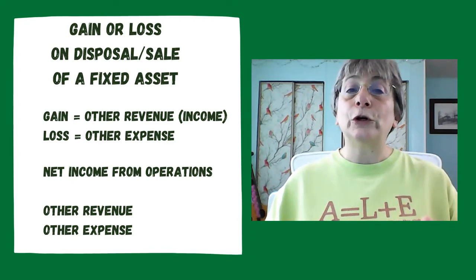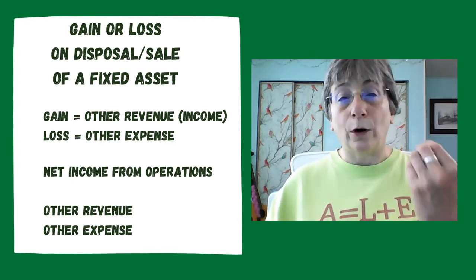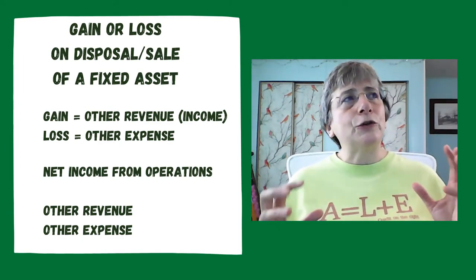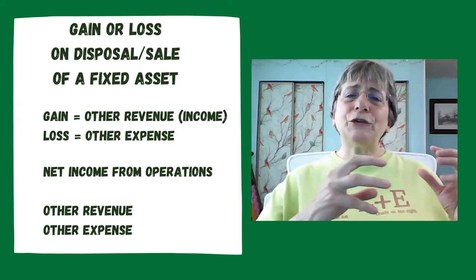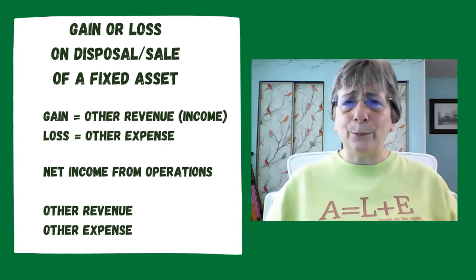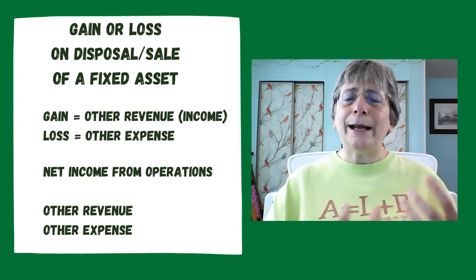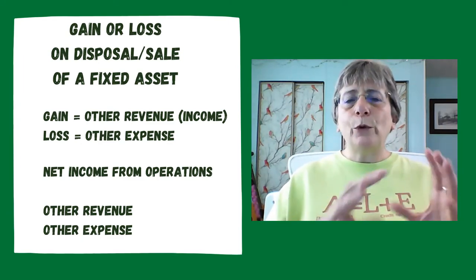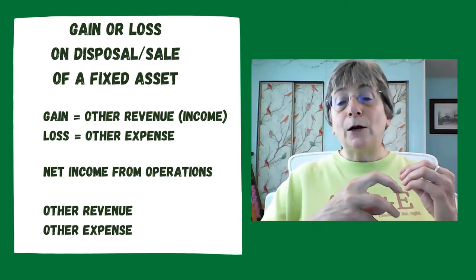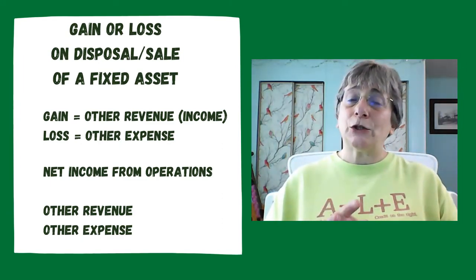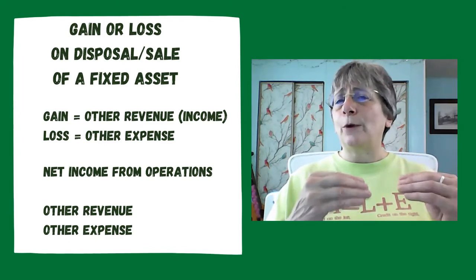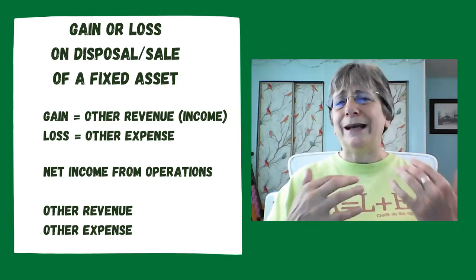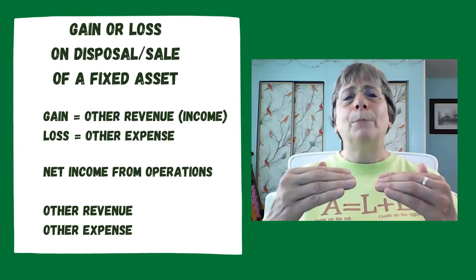If we had investments and sold those, we'd have accounts called gain or loss on sale of an investment, and it would work the same way. Other revenue and other expense accounts track transactions that are not part of our normal business activities. We want to separate out transactions that aren't part of our regular day-to-day business activities, because if we include those in net income from operations, it makes us look more or less profitable than we actually are. These other revenue and other expense accounts cause our reports to drop those items down below our regular net income from operations on the income statement.